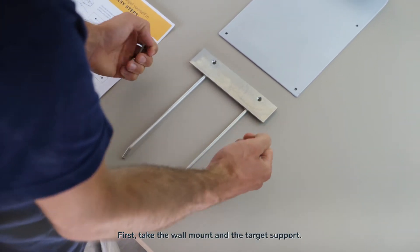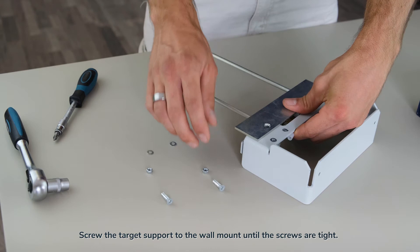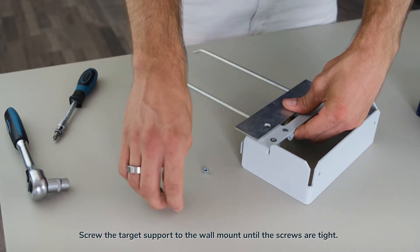First, take the wall mount and target support. Screw the target support onto the wall mount until the screws are tight.